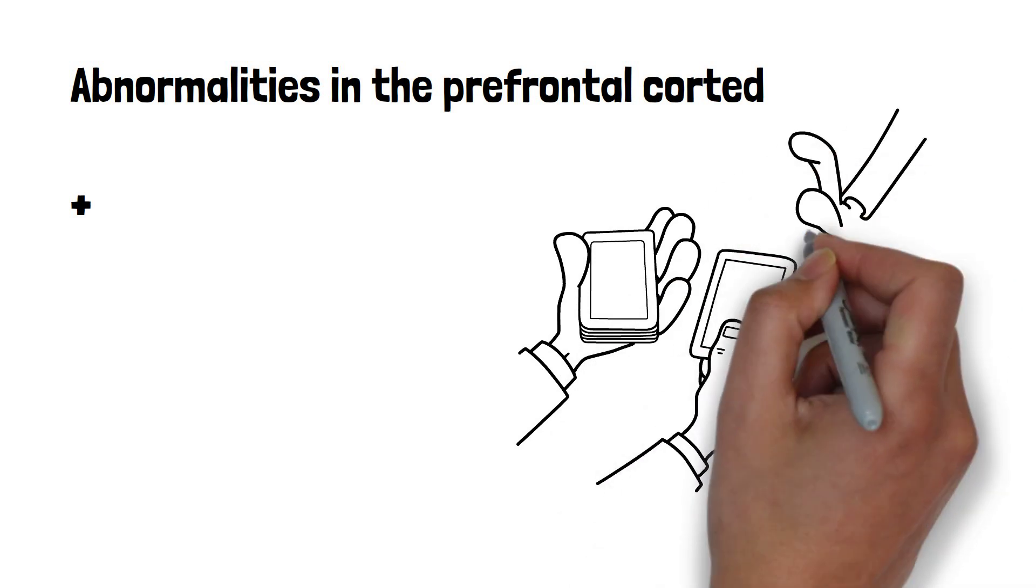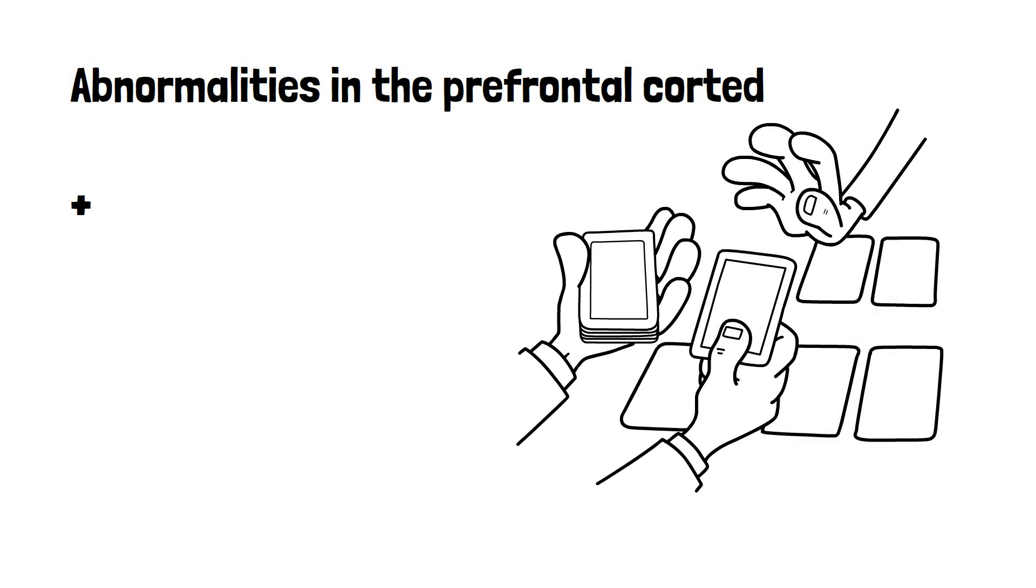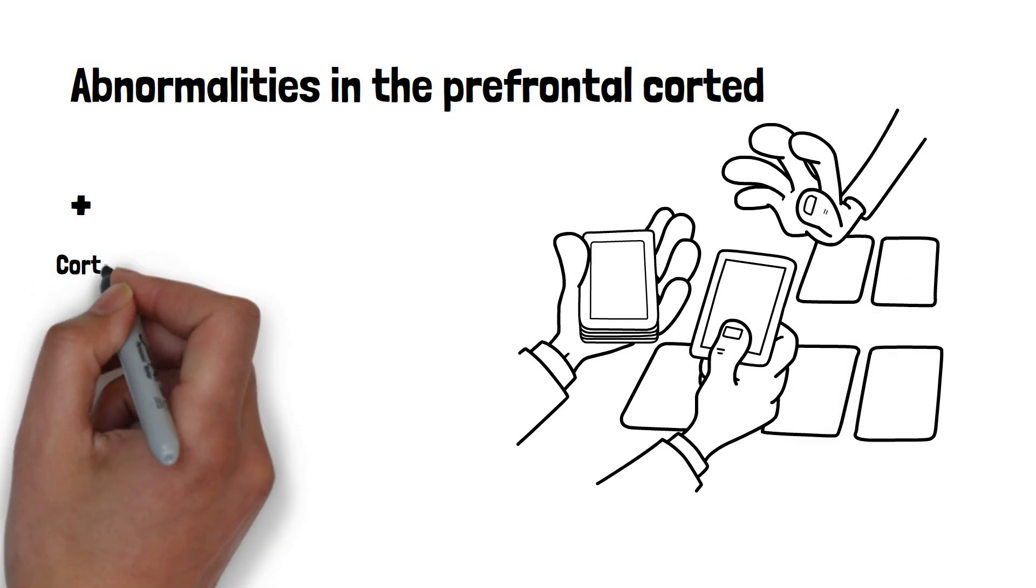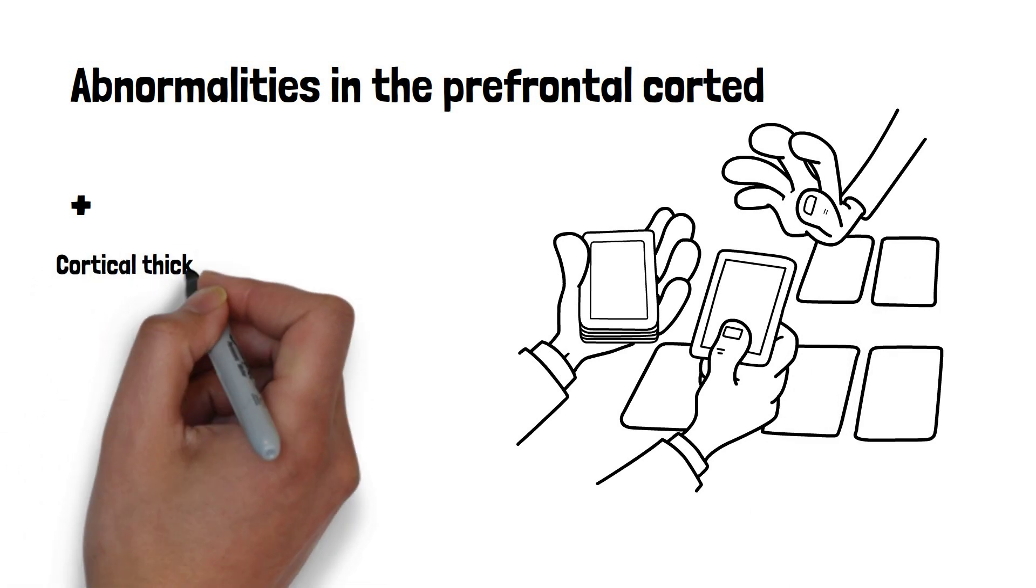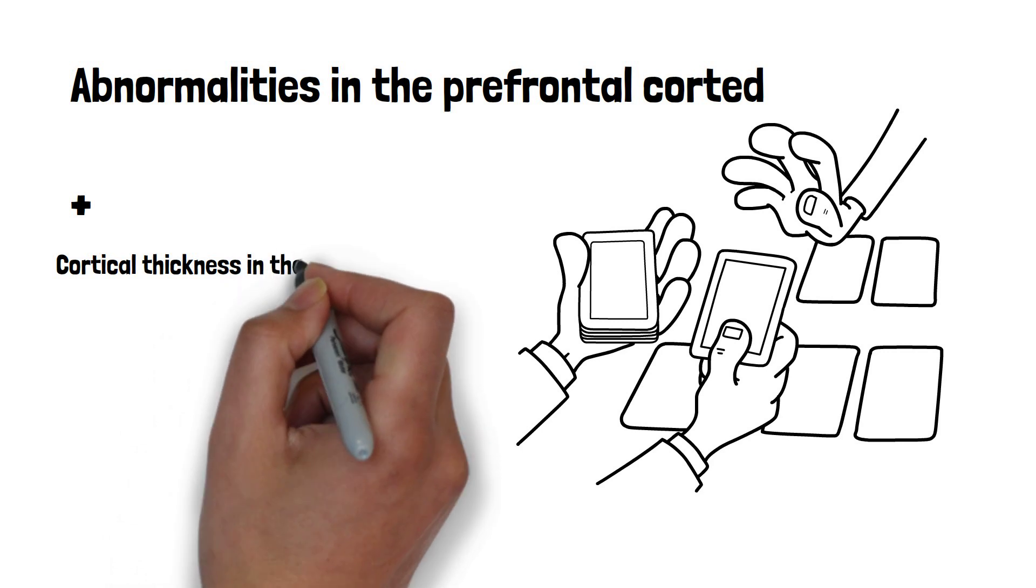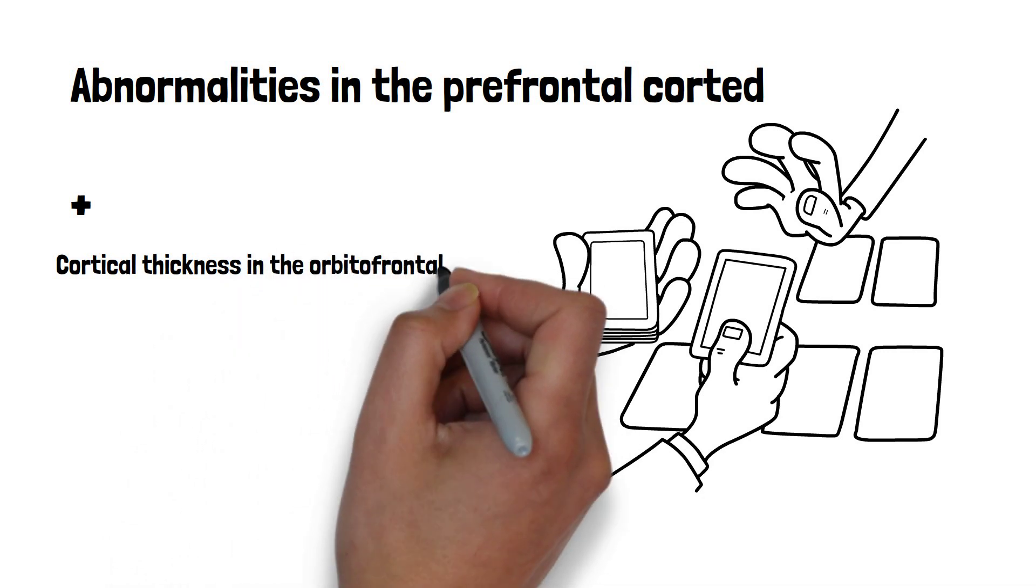Cortical thickness in the orbital frontal region of the brain has been associated with response preservation. This is an individual's desire to continue an action for its reward or self-gratification regardless of the consequences of that action.